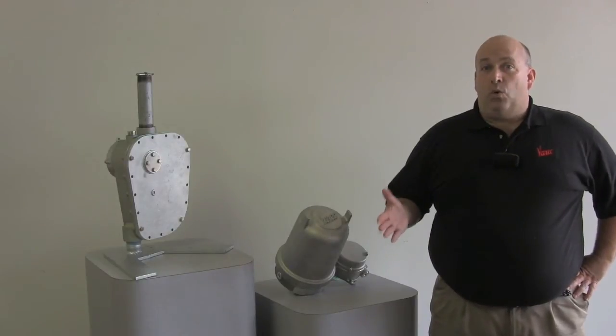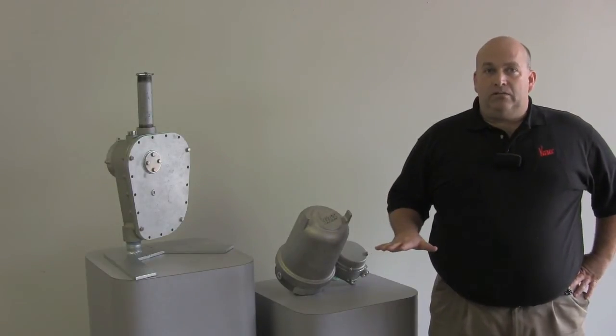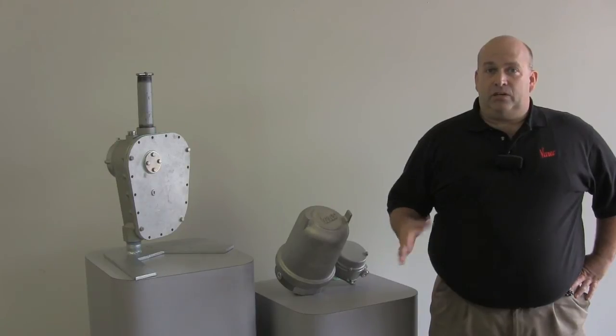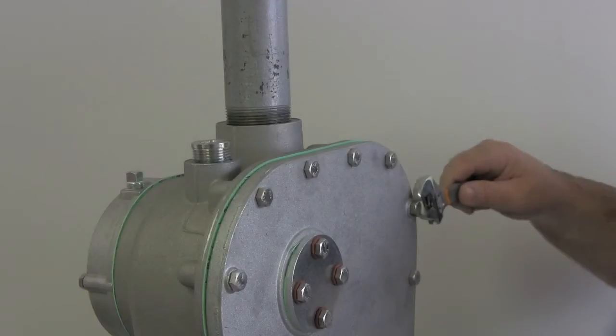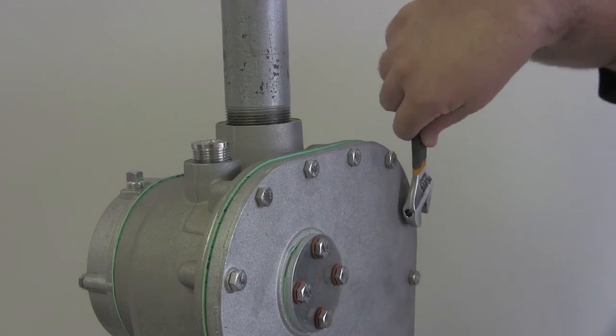First, if the gauge head is oil filled, drain the oil into a container and dispose of it according to your local regulations. Then remove the back cover of the gauge head.